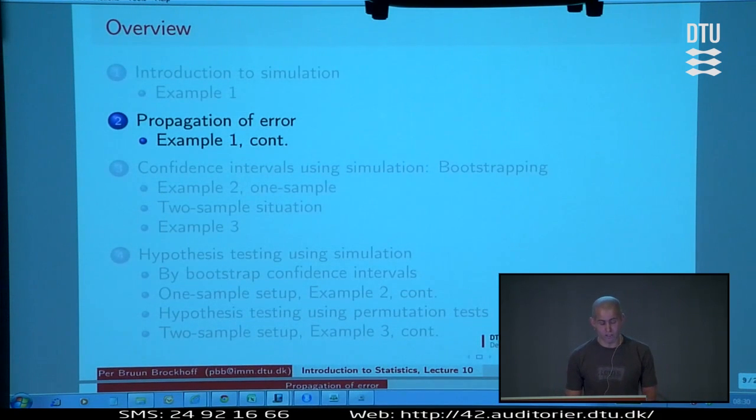This is something which is called propagation of error, which is relevant to talk about in all statistics courses. In a way, it's just putting some other words on what we really do most of the time in our course. We think about how errors propagate, how if we have some variability on the individuals, how does this error propagate through the system.